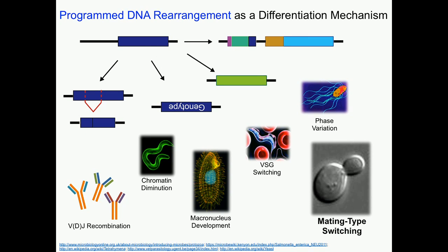When we think about genetic mechanisms of differentiation, our first thought is often changes at the level of gene expression. But we actually know of many examples in nature in which it's a programmed DNA rearrangement — a change at the level of the genomic DNA sequence — that is responsible for changes in cell type. A classic example of this is mating type switching in yeast.